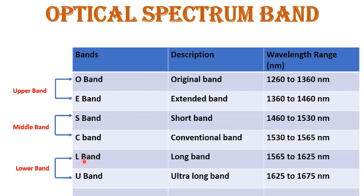The lower band consists of L band and U band. L band stands for long band and U band stands for ultra long band. U band is used beyond the response capability of EDFA — erbium doped fiber amplifier. The L band wavelength range is 1565 nm to 1625 nm and the ultra long band range is 1625 nm to 1675 nm. These two bands have the highest wavelength, meaning the energy and gain of the signal decreases in this band.